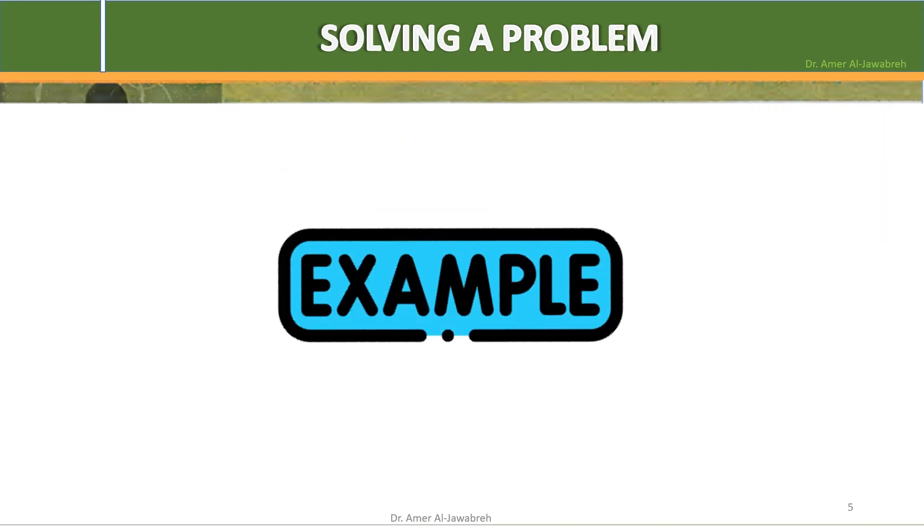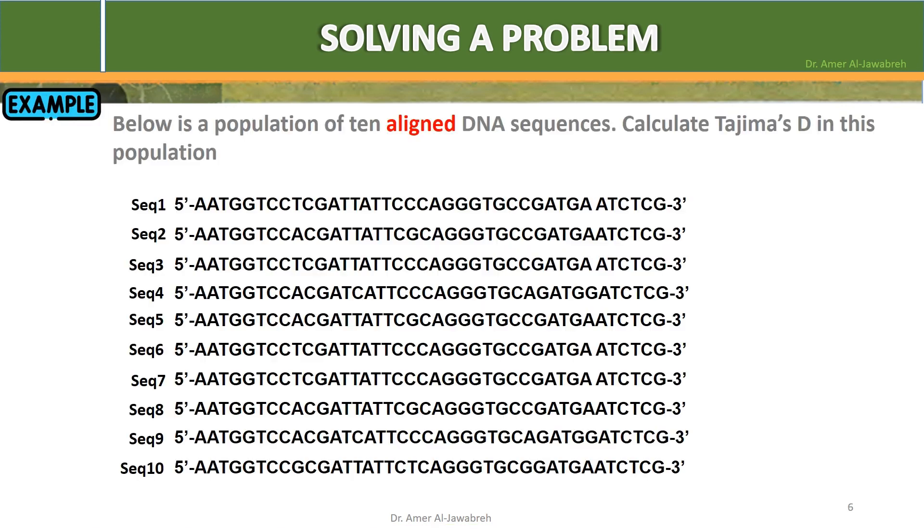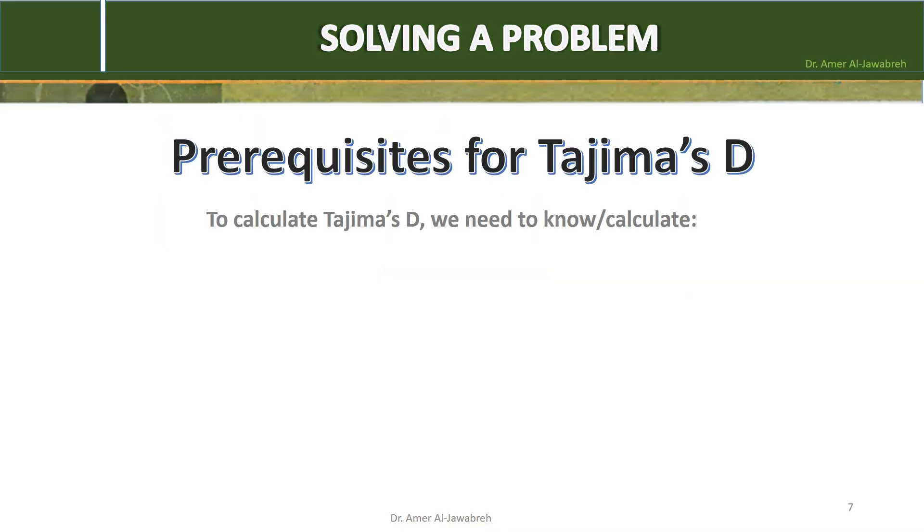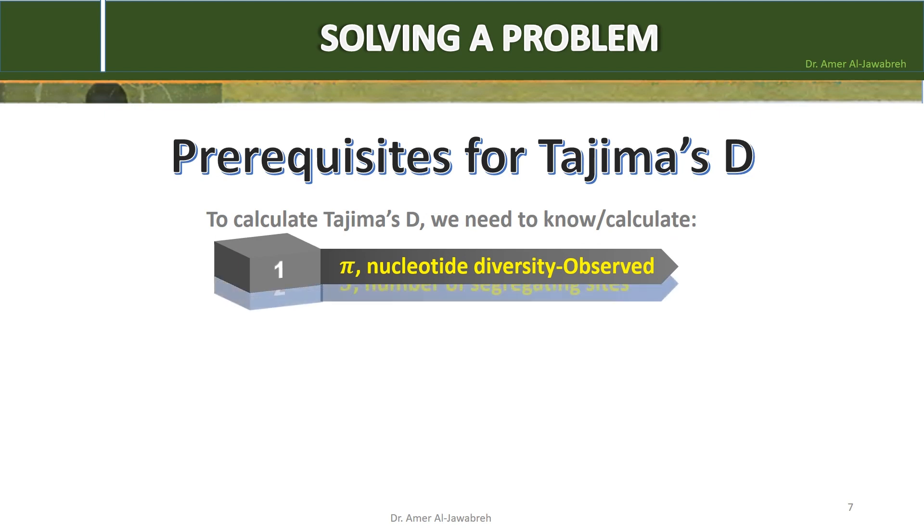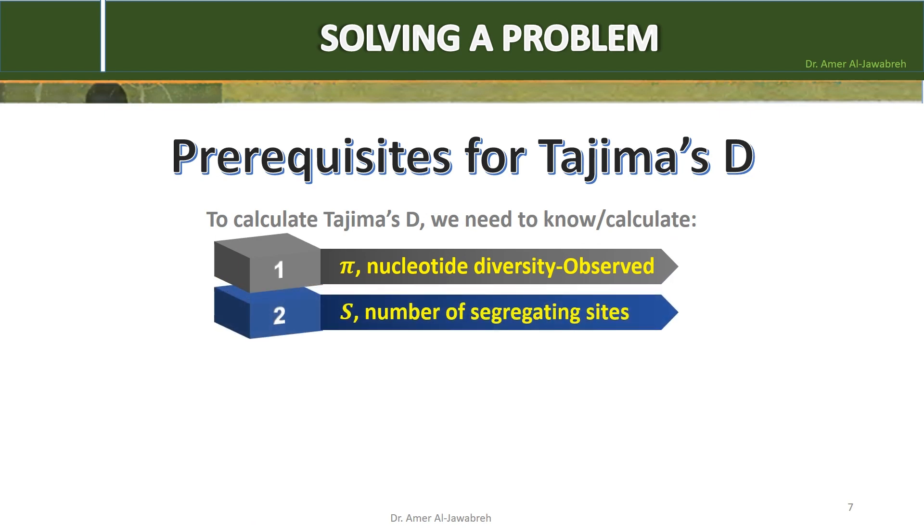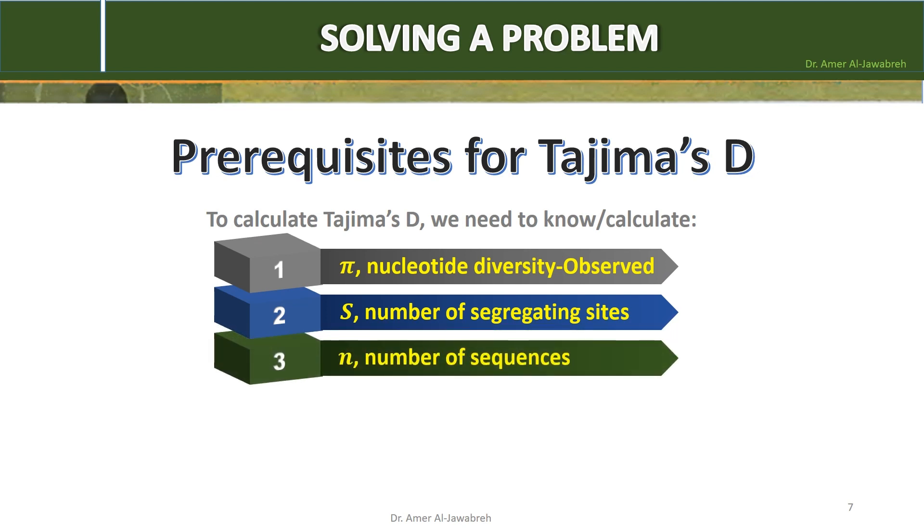Solving a problem example. Below is a population of 10 aligned DNA sequences. Calculate Tajima's D in this population. Prerequisites for Tajima's D: To calculate Tajima's D we need to know or calculate the following: 1. Pi, observed nucleotide diversity. 2. S, number of segregating sites. 3. N, number of sequences. 4. Theta, expected nucleotide diversity. And 5. V, variance.